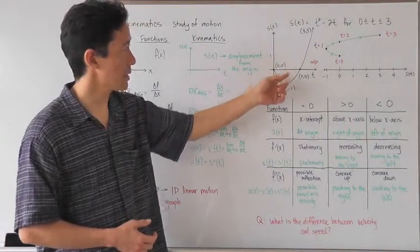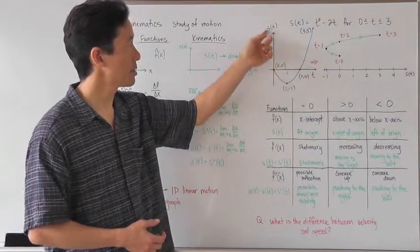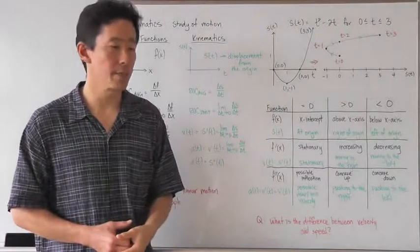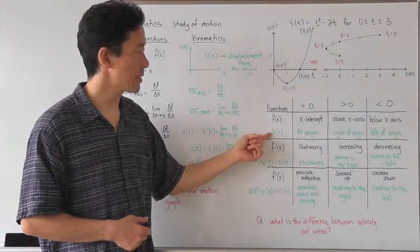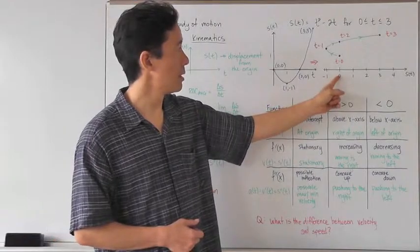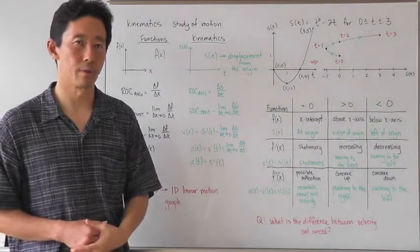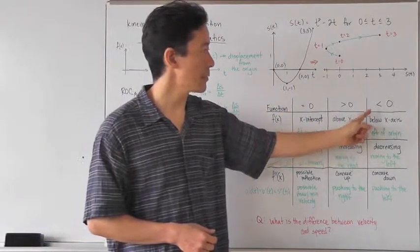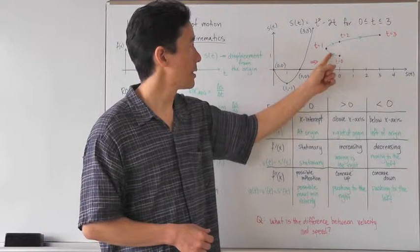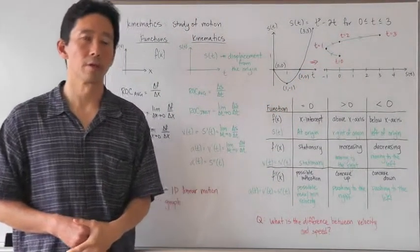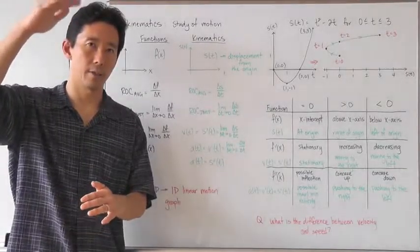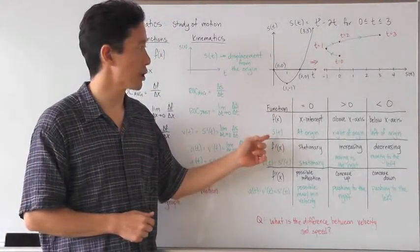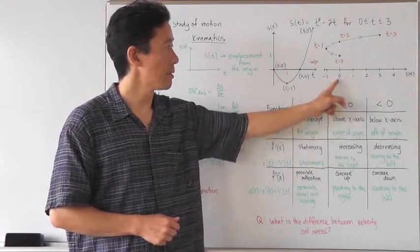Now let's apply this to our displacement function. What does it mean when s of t equals 0? When s of t equals 0, the point is at the origin. When s of t is greater than 0, the particle is to the right of the origin. When s of t is less than 0, the point has to be to the left of the origin. So in the two-dimensional case we're talking about distance from the x-axis, whereas with the kinematic s of t displacement function, we're looking at placement with respect to the origin.